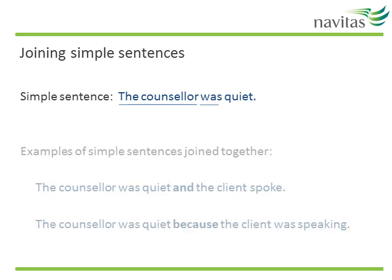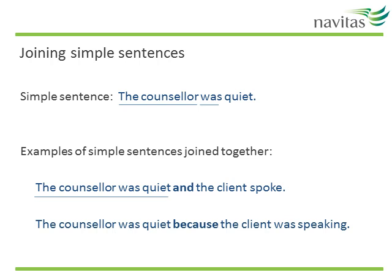Take a look at the next couple of examples of simple sentences joined together. Can you identify the two simple sentences in each example? In the first example we have 'The counsellor was quiet' joined with 'The client spoke', linked together with AND. In the second example we have 'The counsellor was quiet' joined with 'The client was speaking', linked together with BECAUSE. The benefits of these sentences are that we can see how the different ideas relate to each other. This is necessary for academic writing. Of course, the grammar and punctuation is a little more tricky, and sometimes if the sentences are too complex it can confuse the reader.